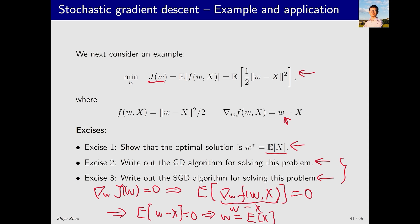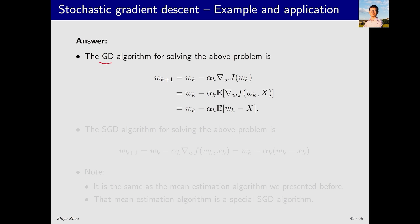Next, let's look at the second and third exercises. What is the gradient descent algorithm to solve this problem? It is w_{k+1} equals w_k minus alpha_k times this gradient. Here the gradient contains the expectation. Then I calculate the gradient of f here, which is w_k minus x. This is the gradient descent algorithm.